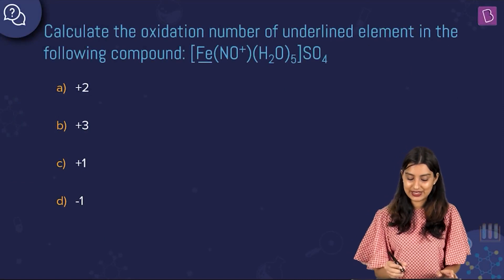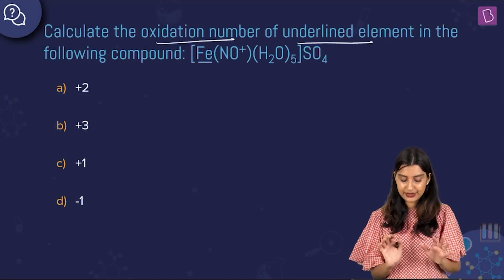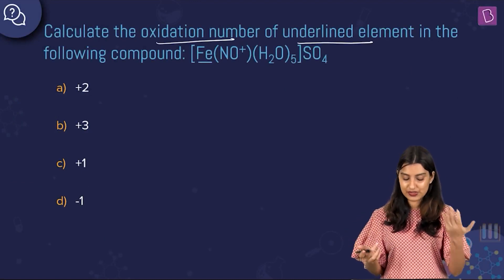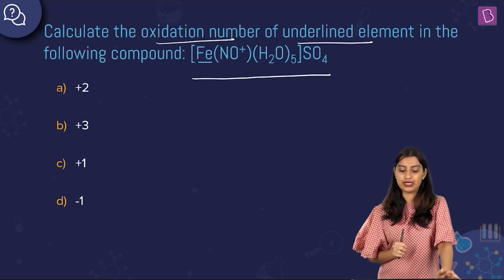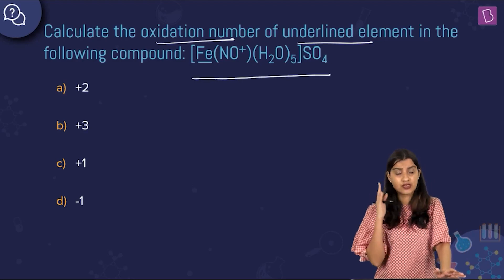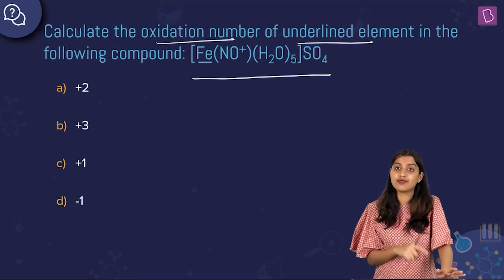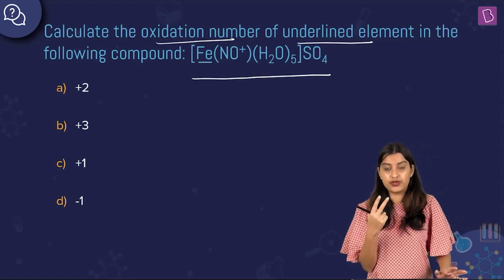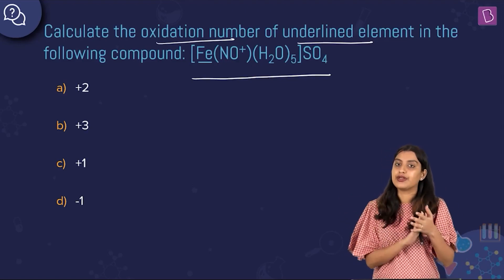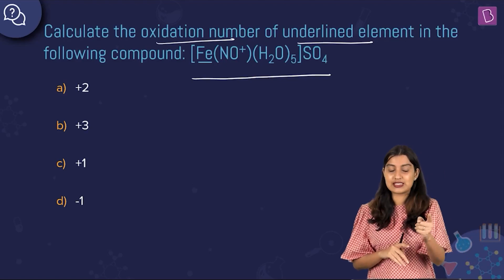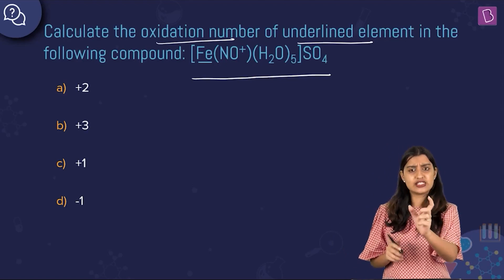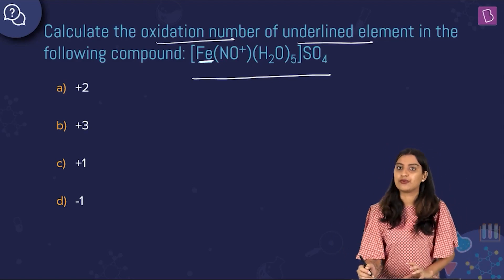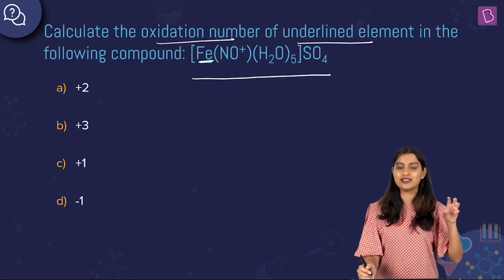The next question asks us to calculate the oxidation number of the underlined element in the compound [Fe(NO)(H₂O)₅]SO₄. This is a complex compound — also called a coordination compound. It involves the concept of coordinate covalent bond or dative bond, which we study more in 12th standard inorganic chemistry. For now, we need to find the oxidation state of Fe in this complex compound.